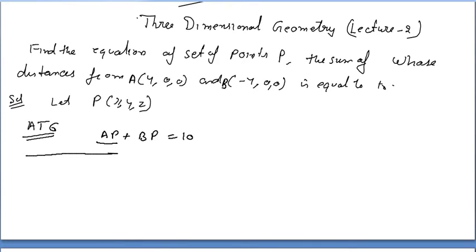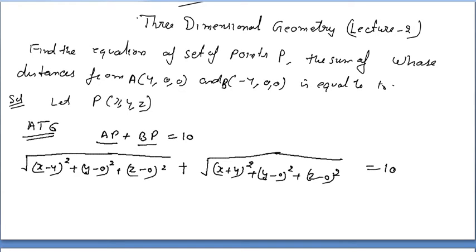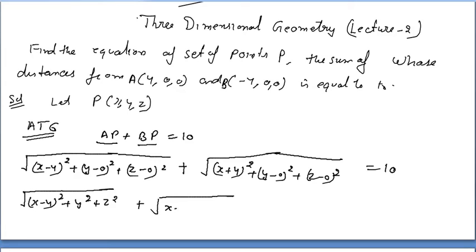Sum of the distance from both points is 10. Using the distance formula, AP equals the square root of (x minus 4)² + (y minus 0)² + (z minus 0)². Similarly, BP equals the square root of (x plus 4)² + (y minus 0)² + (z minus 0)².